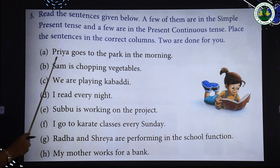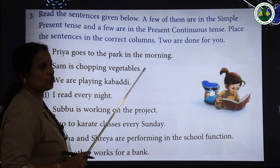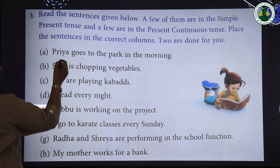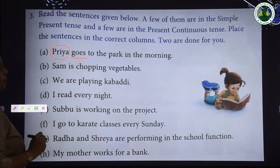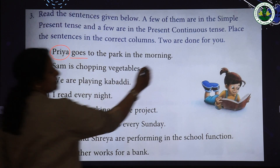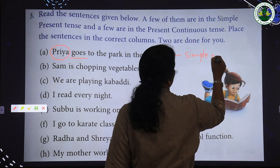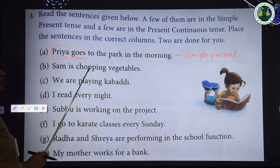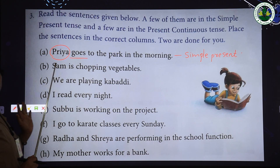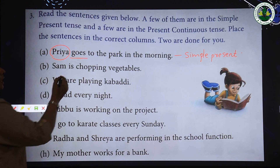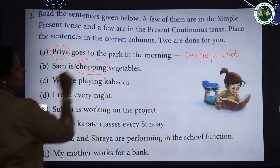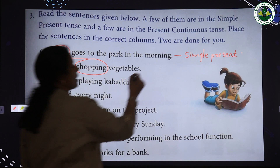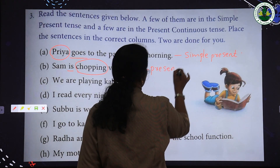Example one: 'Priya goes to the park in the morning.' This happens every day and 'goes' has no 'ing' form, so it is simple present tense. Example two: 'Some is chopping vegetables.' The noun 'Some' is singular with 'is' and the 'ing' form 'chopping,' so it is present continuous tense.